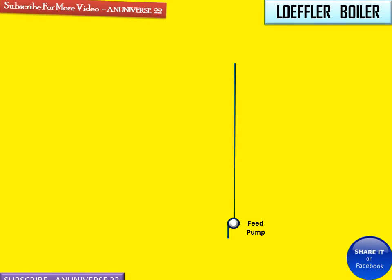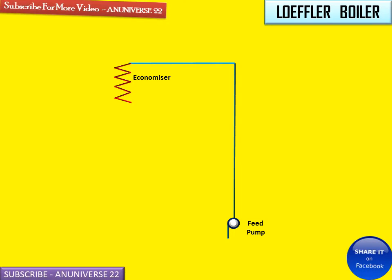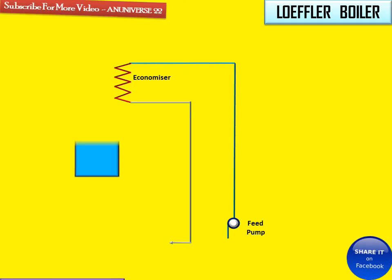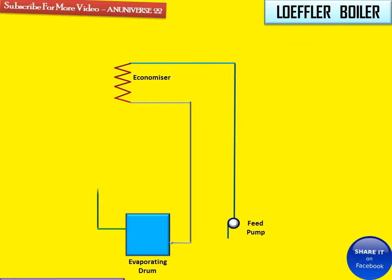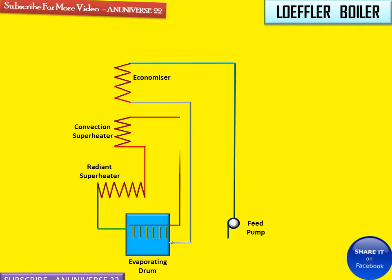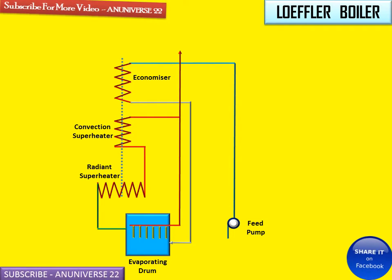Now we will discuss the main components of the Loeffler boiler: the feed pump and the economizer. Feed water is circulated through the economizer tubes by the feed pump, and hot flue gases pass over the economizer tubes to preheat the feed water. From the economizer it is connected to the evaporating drum, and there is also the radiant superheater and convection superheater. The dotted line shows the path of flue gases from the combustion chamber to the atmosphere.